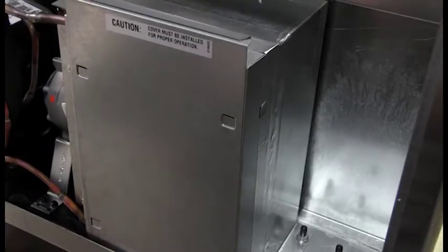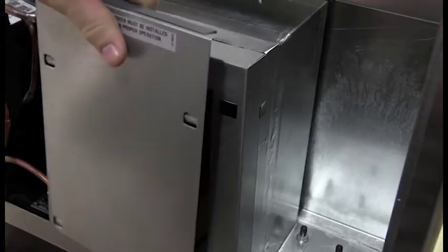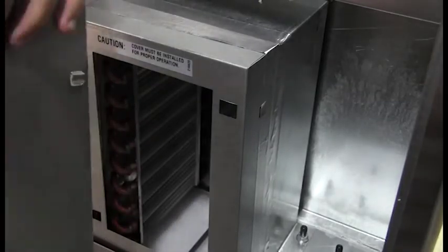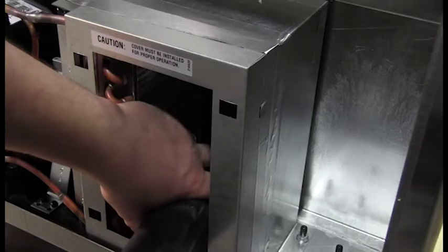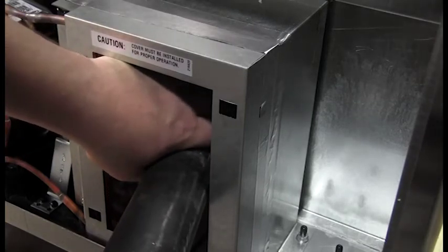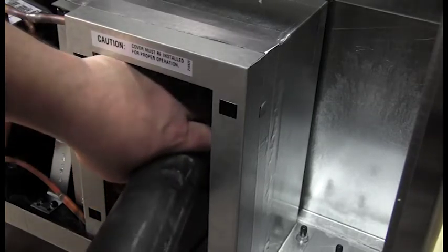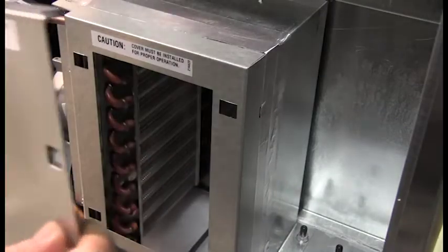The condenser is located on the bottom right hand side of the unit. Remove condenser panel by lifting up. Clean the condenser with a vacuum or soft brush. Be very careful not to bend the fins. And then replace the cover.